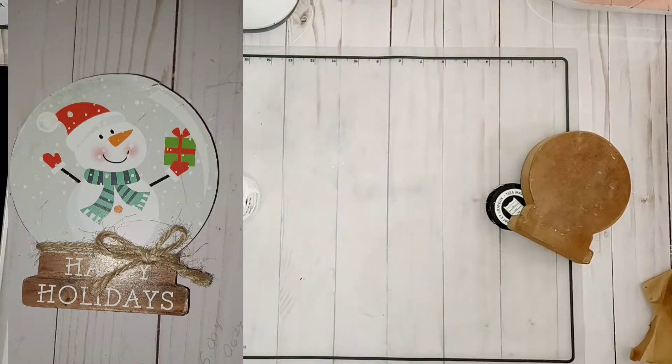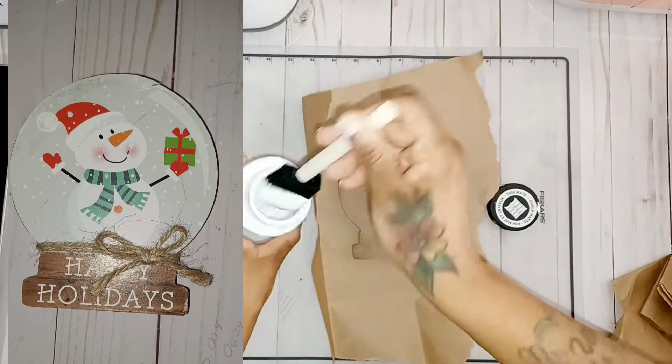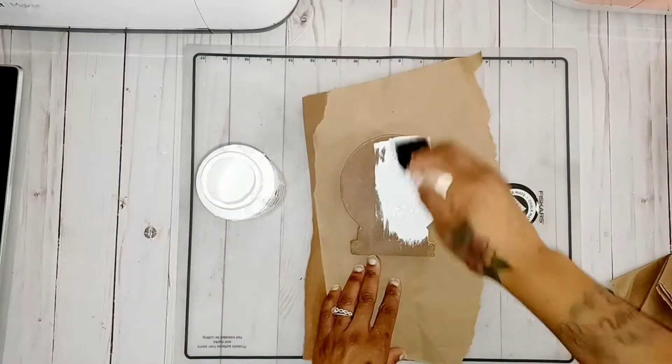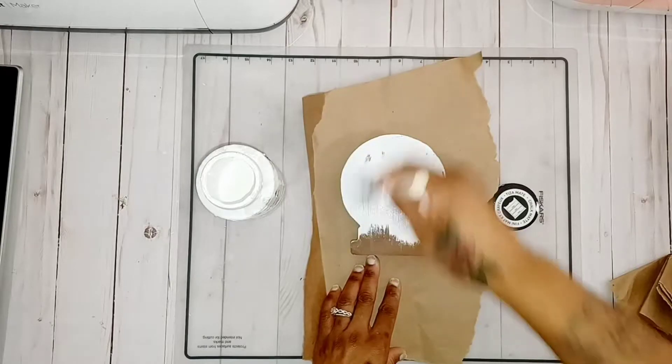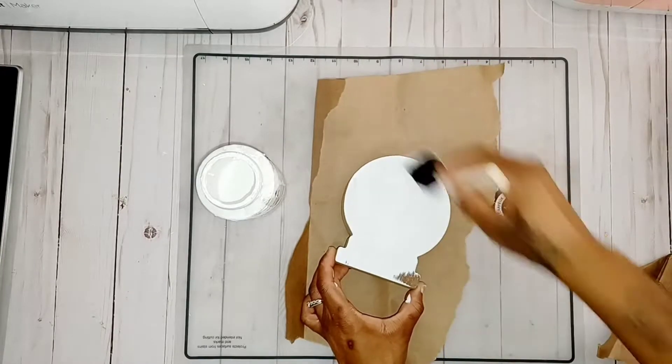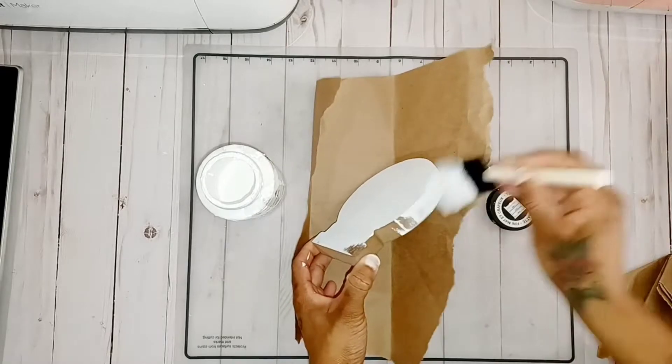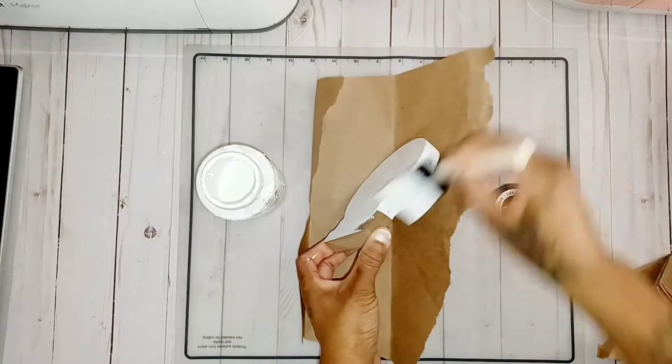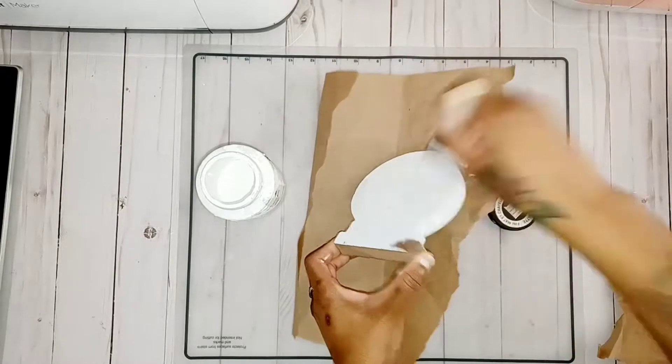So for the first DIY I wanted to create this Santa cam sign for Christmas. I took a dollar tree sign, I let it soak in water and I peeled the paper off. Anything that was left on after I peeled the paper off, I just took some sanding paper, my sanding pad, and sanded it down.